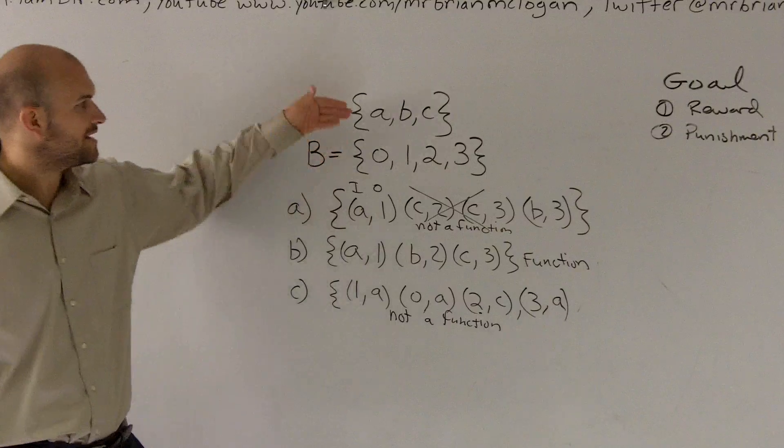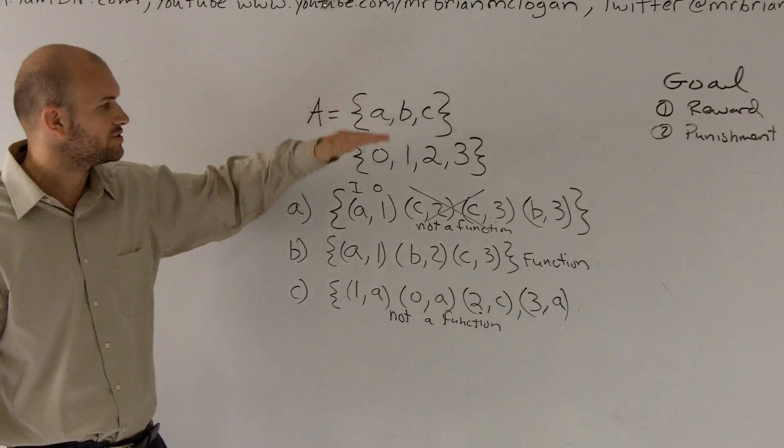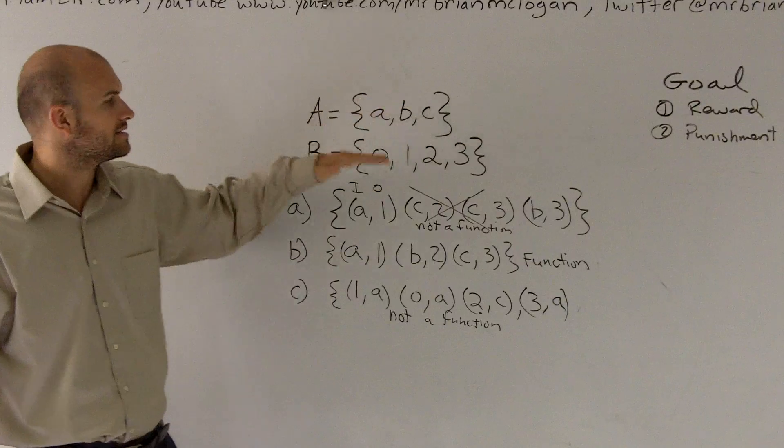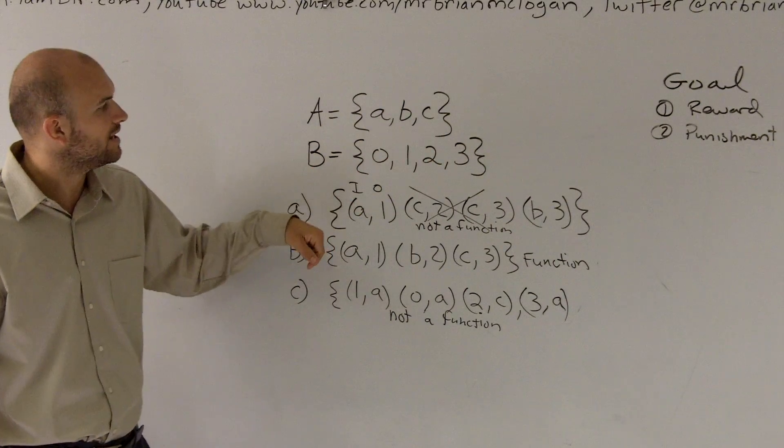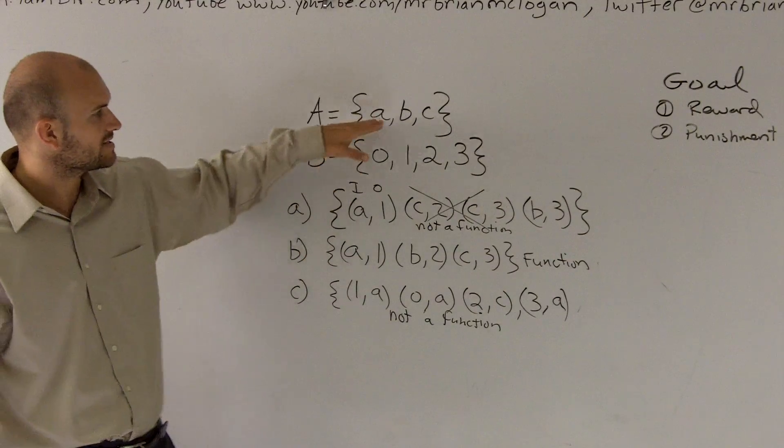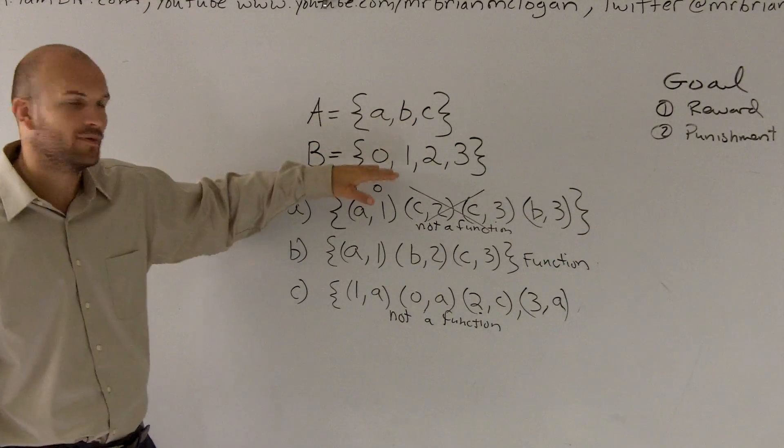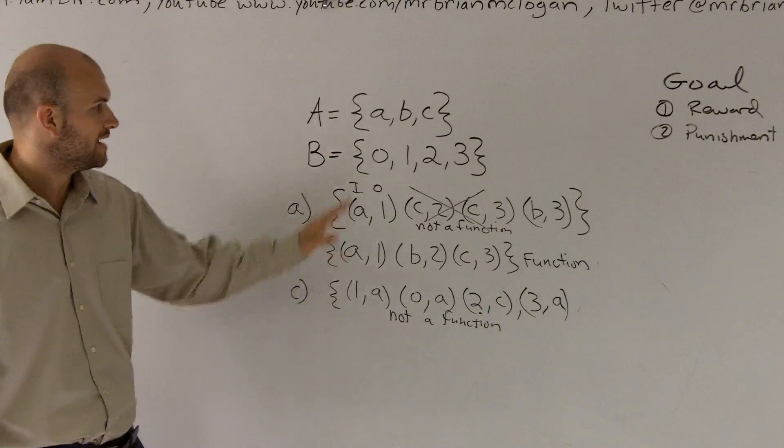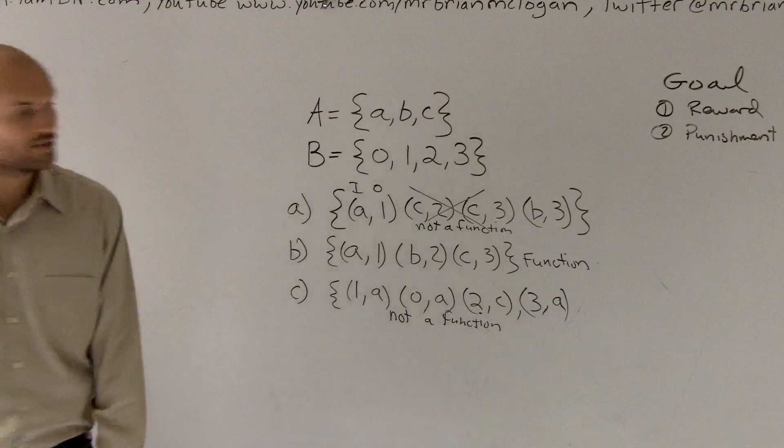So just a quick reminder, you always have to have everything in set A as your input values. All goes to a unique value in your output values. You can have extra in the output values. And you can have the same input values, or different input values go to the same output values. But they all have to be a unique relationship. So that is how you determine if it's a function relationship.